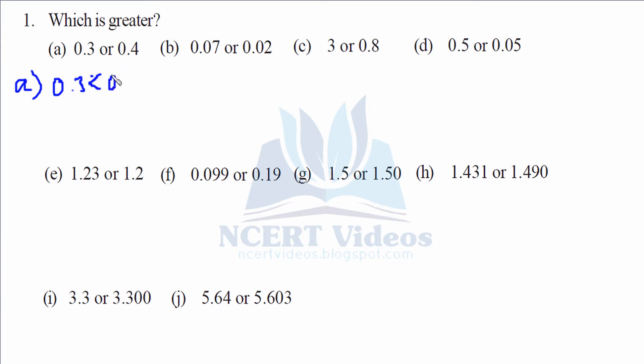That makes our part a. Now part b: we have 0 on both sides, 0 in the tenths place. In the hundredths place, 0.07 is greater compared to 0.02, therefore greater than sign. That makes our part b.